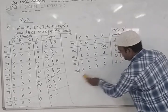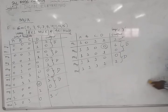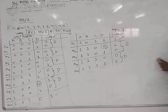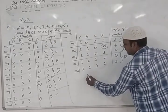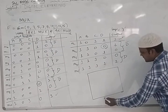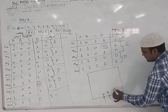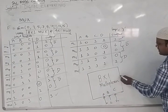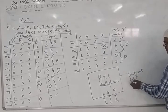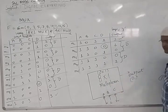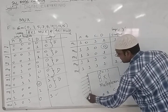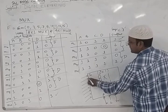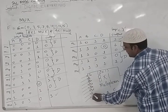For the 8-to-1 MUX design: we have three select inputs — S0, S1, S2 assigned to A, B, C — giving 2³ = 8 combinations, hence 8-to-1. There are eight inputs: I0 through I7, and one output. I assign the inputs accordingly based on the values derived from the truth table.